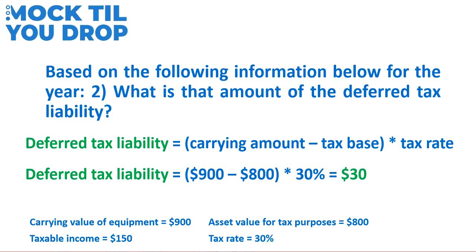The calculation is: carrying amount minus tax base, multiplied by the tax rate. In this case, $900 minus $800 equals $100, multiplied by 30%, giving us a $30 deferred tax liability. Had the tax base been greater than the carrying amount, we would have had a deferred tax asset, and the calculation would be reversed: tax base minus carrying amount, multiplied by the tax rate.